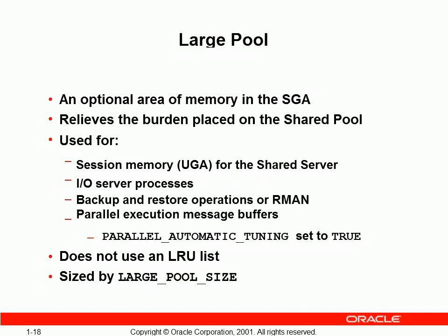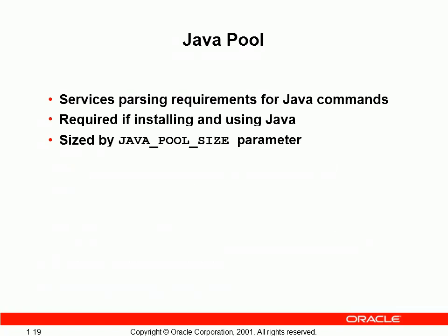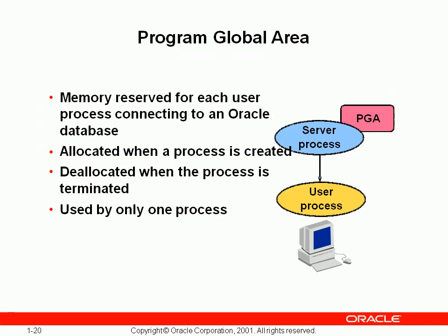The large pool is in the System Global Area and is used for session memory, input-output processes, RMAN operations, and parallel executions. The java pool is used to serve Java commands. PGA, Program Global Area, is used to process requests and has reserved memory for each user connected.